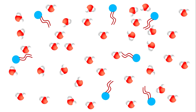Now, what would happen if a molecule has both hydrophilic and hydrophobic nature? On one hand, the polar head groups will try to face the bulk water in order to maximize the enthalpy gain. On the other hand, the hydrophobic tails will try to cluster together to maximize the entropy gain.